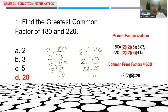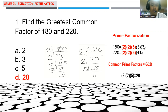Let's consider the first problem. You were asked to find the greatest common factor of 180 and 220. Before we get the greatest common factor, the first thing we need to do is understand and recall the idea about greatest common factor.